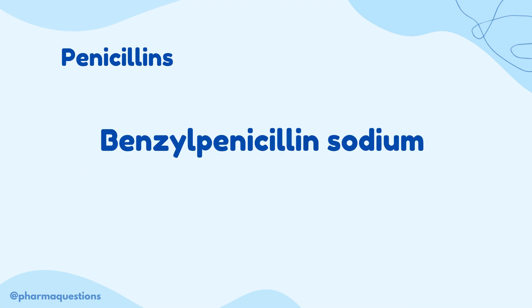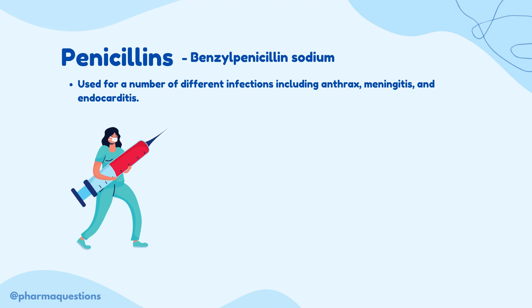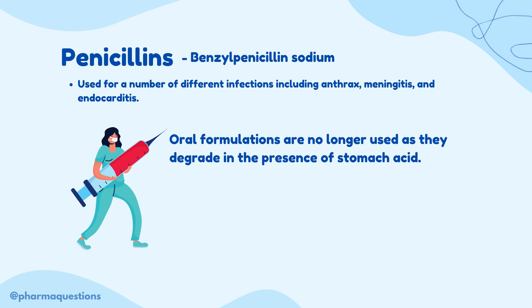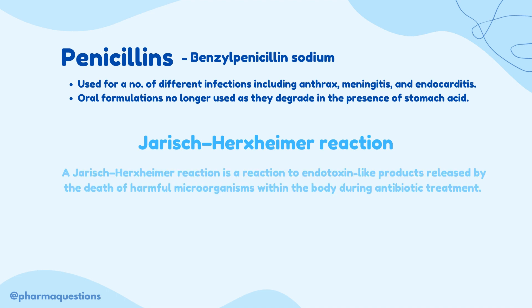The next antibiotic we'll be looking at is benzyl penicillin sodium. This antibiotic is used for a number of different infections including anthrax, meningitis and endocarditis. Oral formulations of this antibiotic are no longer used as they degraded in the presence of stomach acid, rendering them ineffective. A common side effect to note is the possibility of a Jarisch-Herxheimer reaction — referred to as JH — which is a reaction to endotoxin-like products released by the death of bacteria within the body during antibiotic treatment.